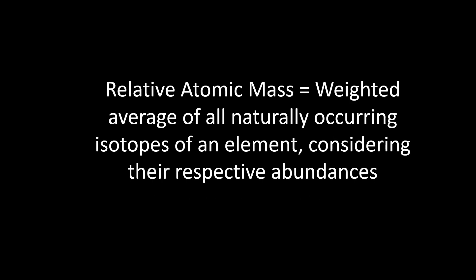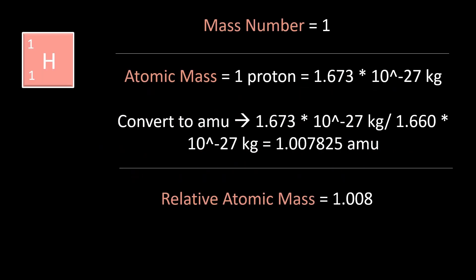Relative atomic mass encapsulates a weighted average of all naturally occurring isotopes of an element, considering their respective abundances. This is useful because it gives a more accurate mass of a chemical sample, as it's likely this sample will contain isotopes.